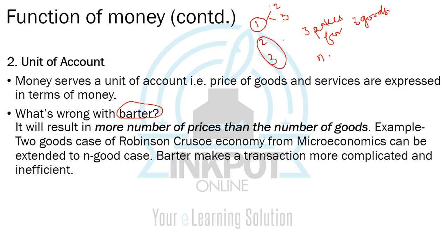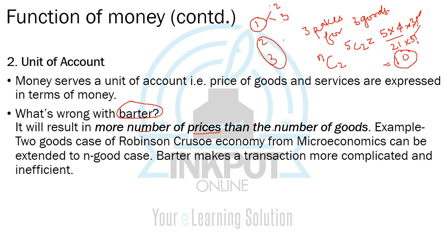For example, if there are five goods, we'll have 10 prices — more prices than goods. As the number of goods keeps increasing in an economy, the barter system becomes a lot more tedious. We tend to have more prices than goods. One example you can look at is the Robinson Crusoe economy. In a way, barter makes transactions a lot more complicated and inefficient.